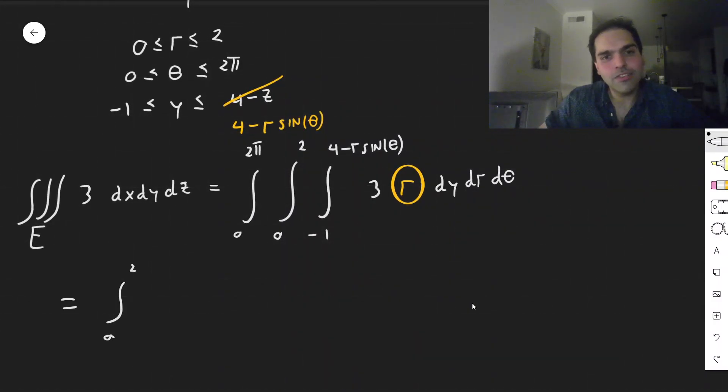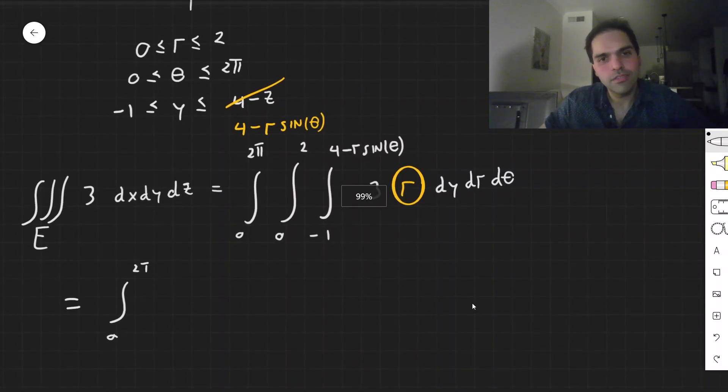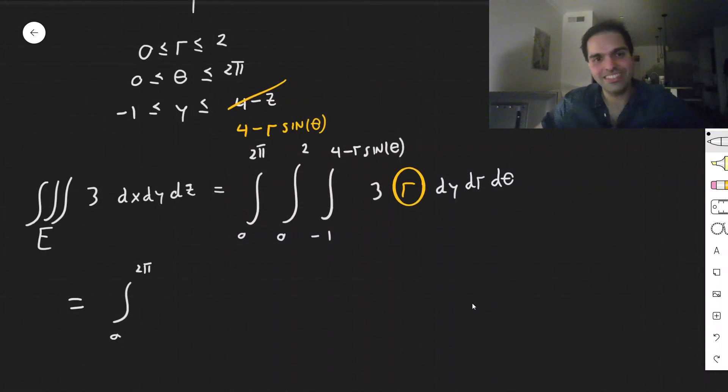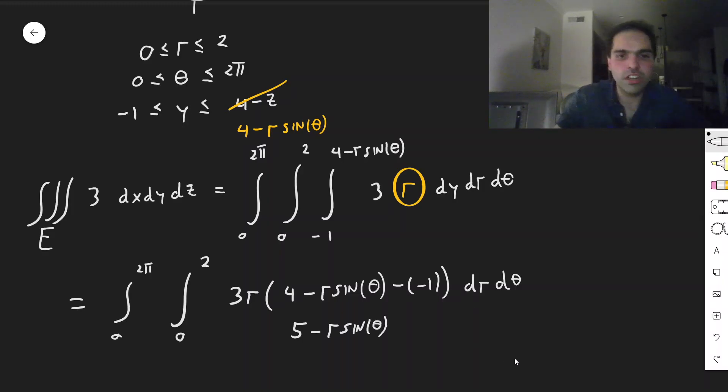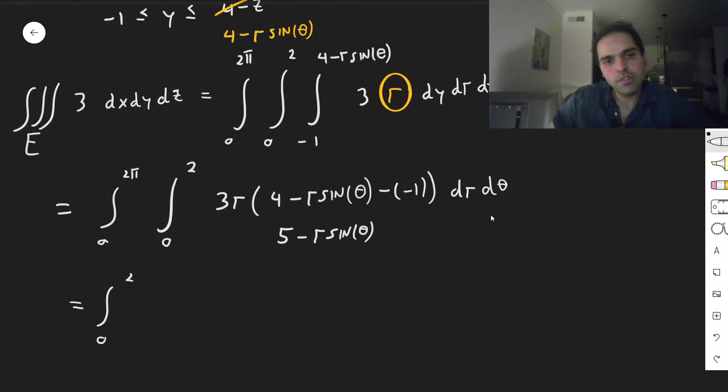Okay. And then, this becomes integral from 0 to 2 pi, integral from 0 to 2. And then the nice thing is, this does not depend on y. So it's just 3r times this minus this. So 4 minus r sine of theta, and then minus minus 1. This you can simplify. It just becomes 5 minus r sine of theta. And then what we get is integral from 0 to 2 pi, integral from 0 to 2 of 15r minus 3r squared sine of theta dr d theta.